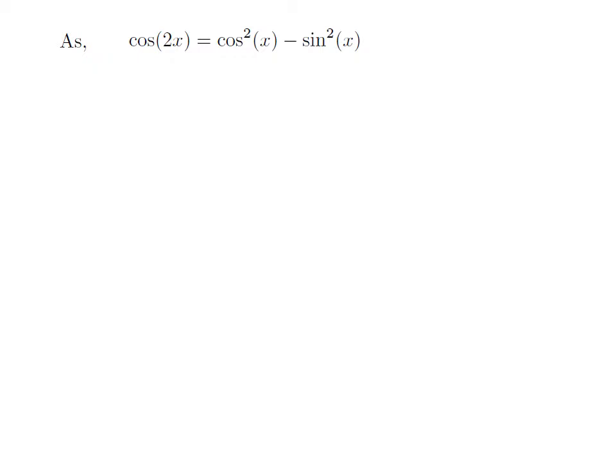The cosine of 2x is equal to the square of cosine of x minus the square of sine of x. The proof of this identity has been explained in the video appearing in the upper right corner, and the URL has also been mentioned in the description section.